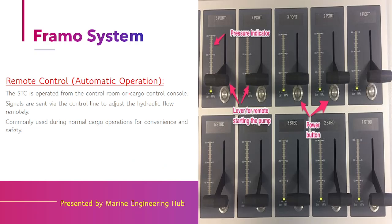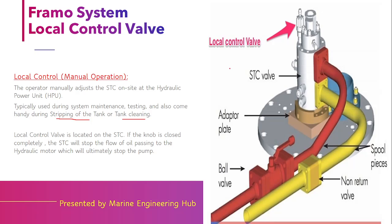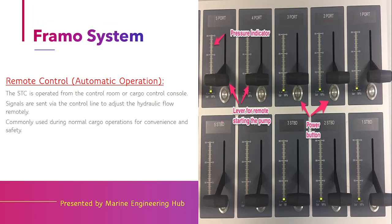Now for remote operation: a panel is provided in the CCR — the Cargo Control Room. When you want to operate the Framo pump remotely, click the button and push the knob in the required direction. The pressure will start to build up gradually. The gauge shows 100 bar, 200 bar, and 300 bar. Depending on the requirement — say 150 bar — you put the knob at that position. Different pumps have different port knobs: 5-port, 4-port, 3-star, etc., giving the convenience of remote operation.